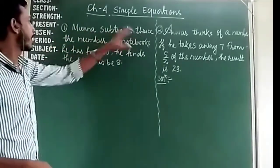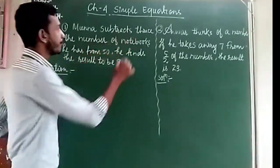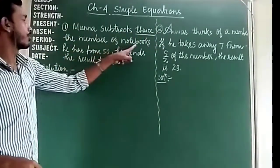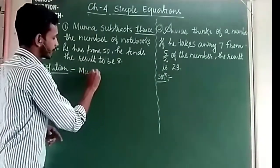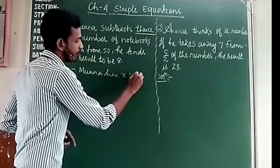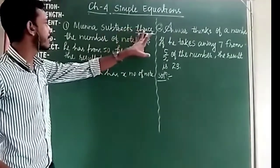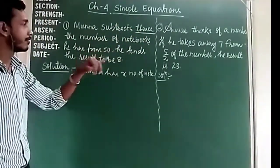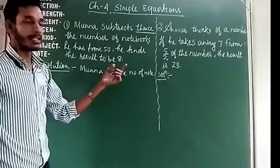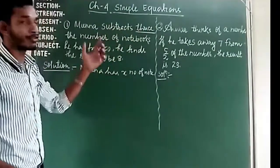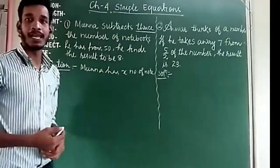Let's solve the first question. Munna subtracts 3 times the number of notebooks he has from 50, and he finds the result to be 8. We don't know the number of notebooks he has, so let's take Munna has x number of notebooks.